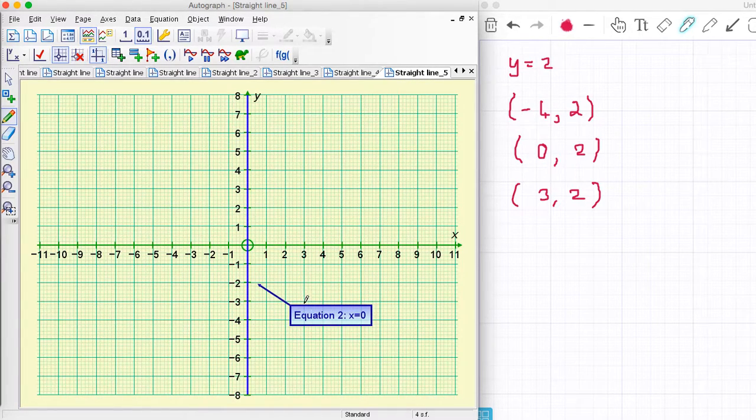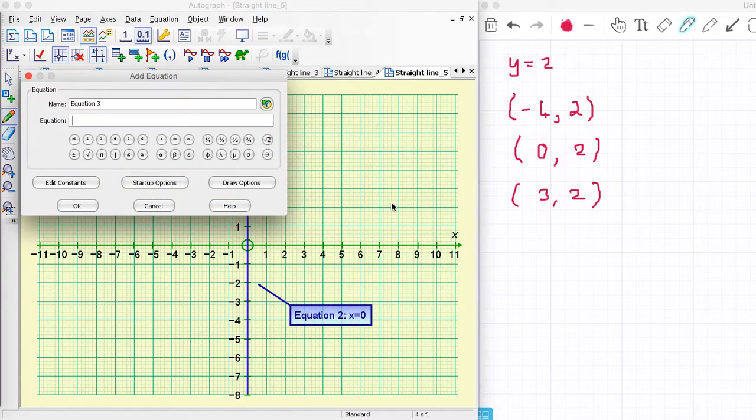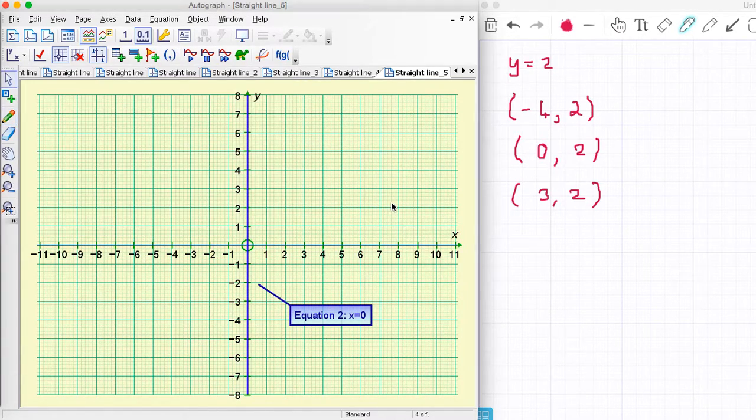And finally, where we have x equals 0, it just goes along the y axis because all the way along there x is 0. So y equals 0 will go along the x axis. Let's just plot y equals 0 onto there, and as you can see, that just drew a line all along the x axis. So that is horizontal and vertical straight lines.